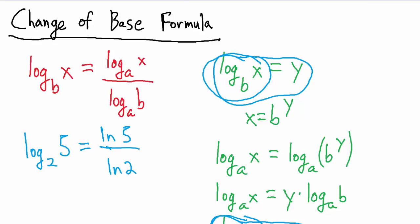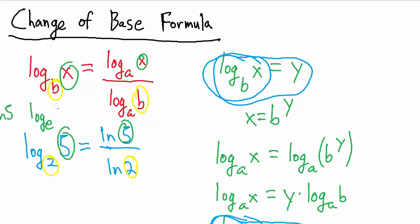How does that work? The change of base formula says base B log of X equals base A log of X over base A log of B. In this example, 2 is our B and 5 is the X. E — that special base we talked about earlier, the base for the natural log — is our A. So when we say LN5, that's the same thing as base E log of 5. Since the calculator has the natural log capability, we can evaluate this approximately.